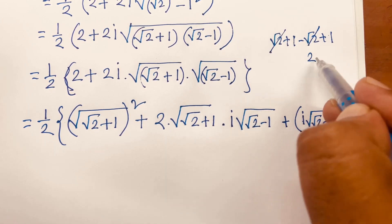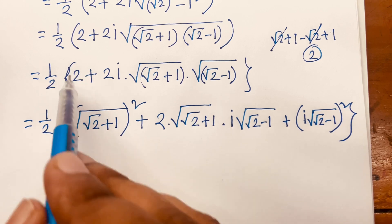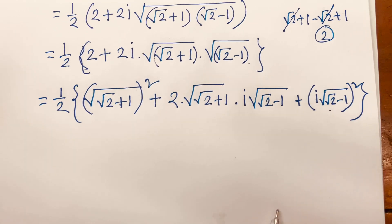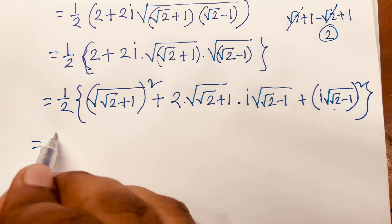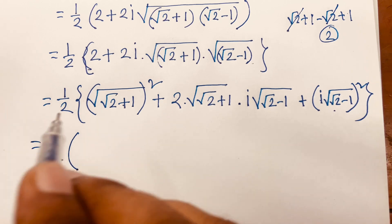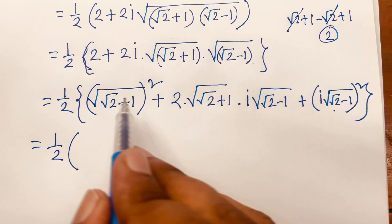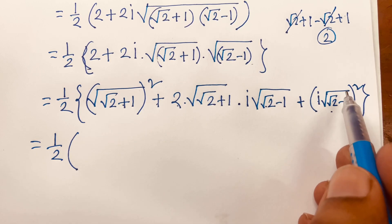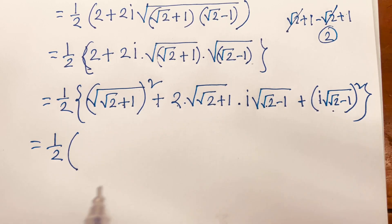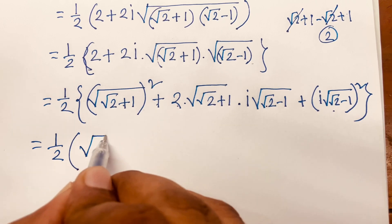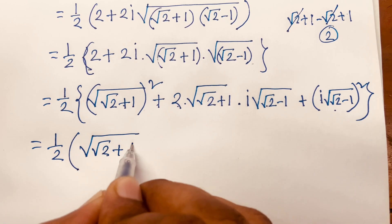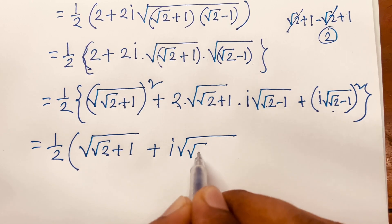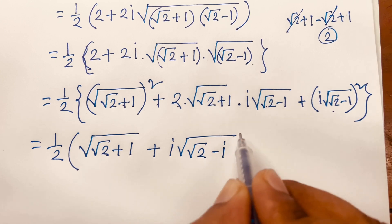That is why I simply divide by 2 — this term and this term — but these terms are the same. Now, I can say here is 1 over 2, and if you think it is a and it is b, you know that a² plus 2ab plus b² equals (a+b)². So, I can say here is square root of (√(√2+1) + i√(√2−1)) whole square.